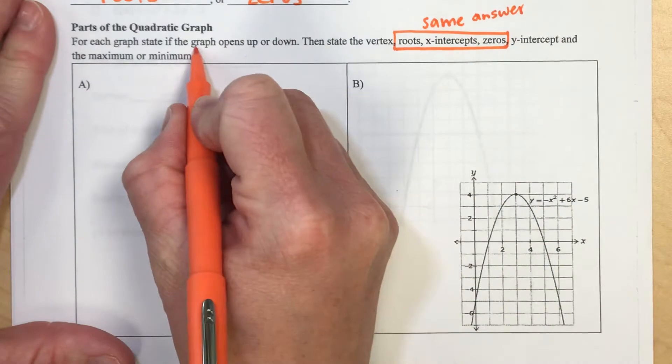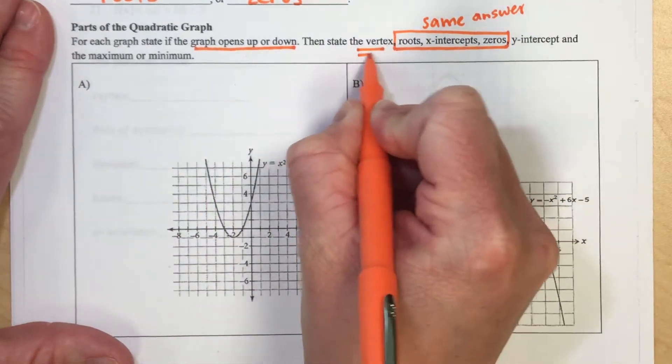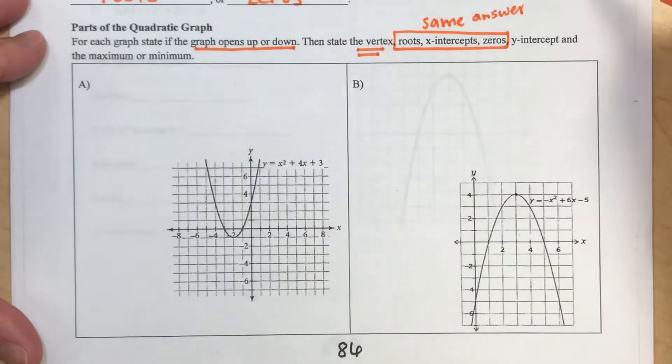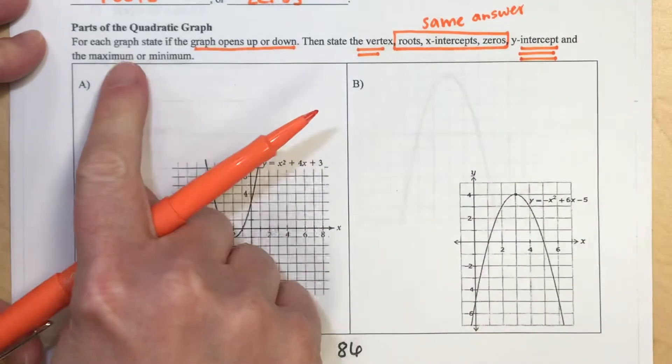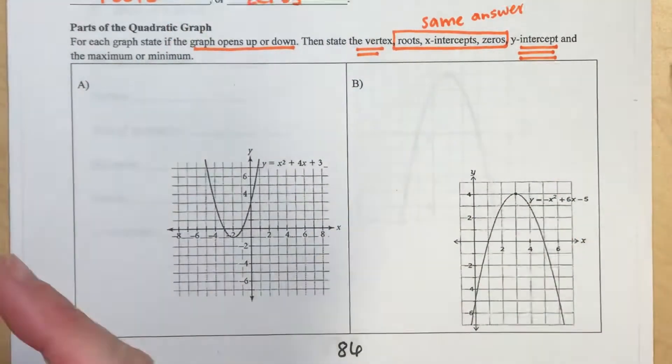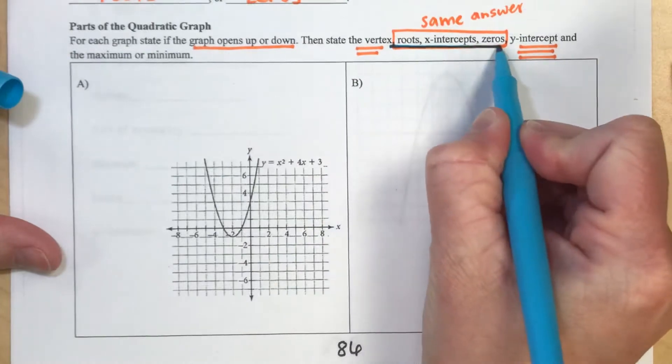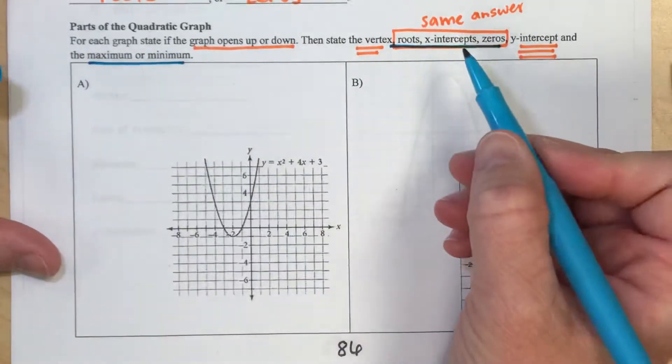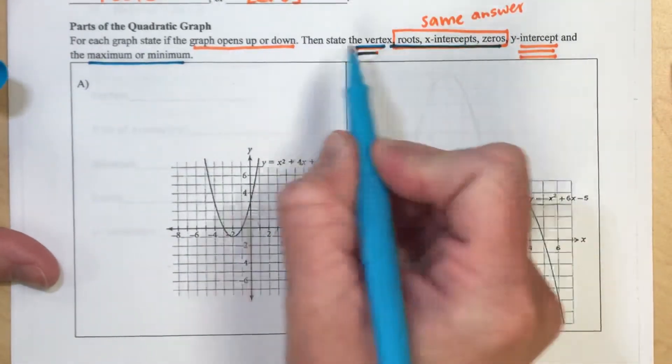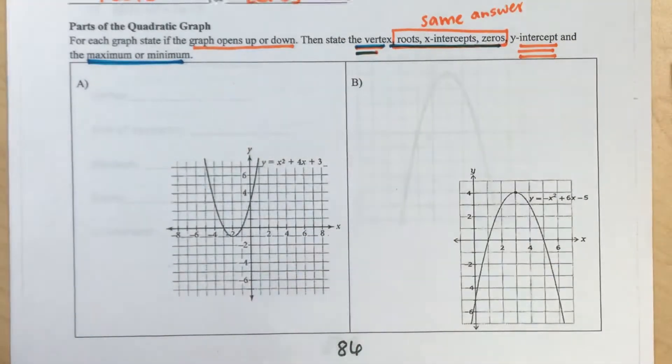So I'm going to make sure I identify does it open up or down, vertex, we'll talk about the y-intercept, and then lastly we'll talk about min or max. And I'm actually going to do these together, no actually I'll do it with the vertex because we'll state if the vertex is a maximum.